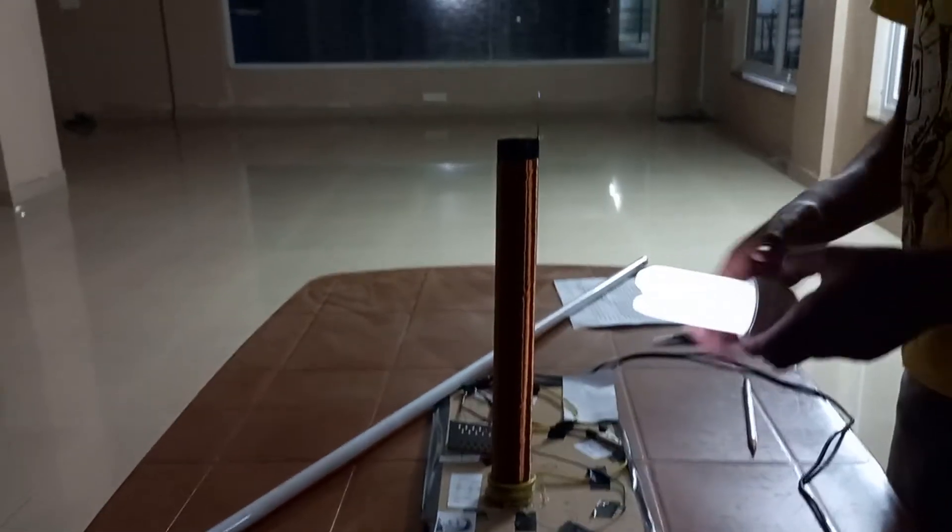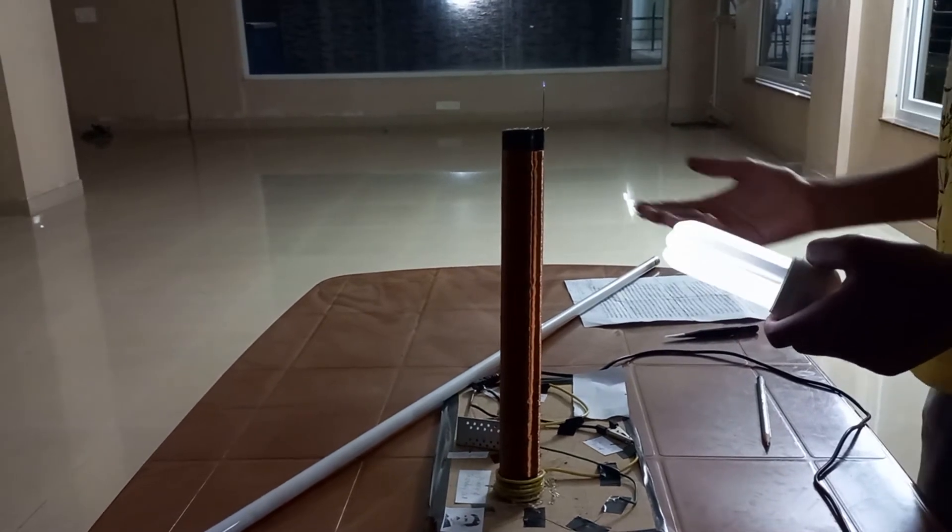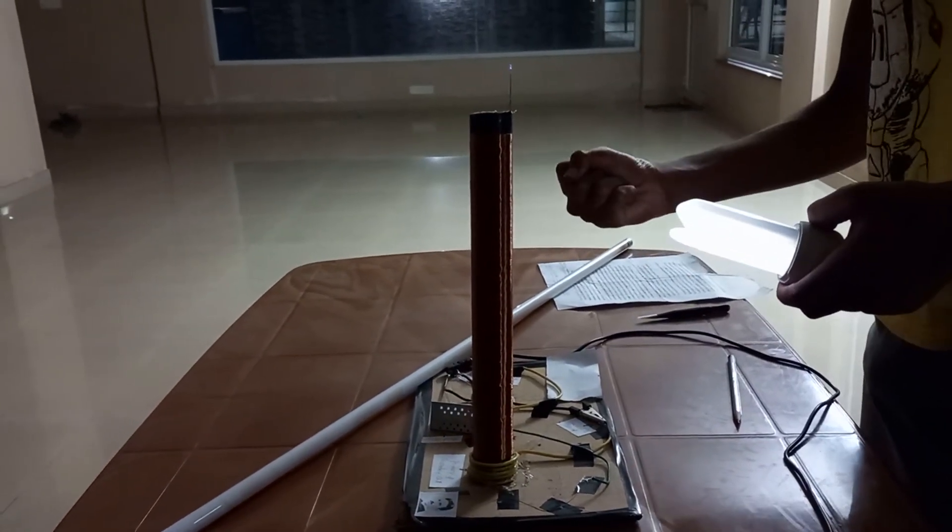I can block this electricity with my hand because the electromagnetic field gets absorbed by my hand so that it won't supply any more voltage or electricity to the bulb.